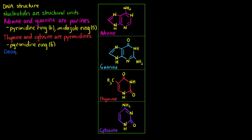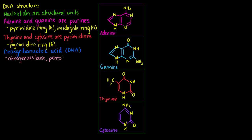So that covers our bases, but what about the rest of the DNA structure? We call it deoxyribonucleic acid, and that name actually means something. DNA is made of three separate units: the nitrogenous bases we just discussed, a pentose sugar — pentose meaning five, like a pentagon — and lastly a phosphate group.